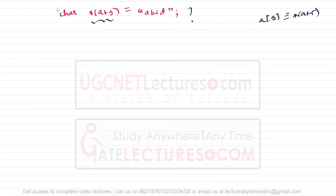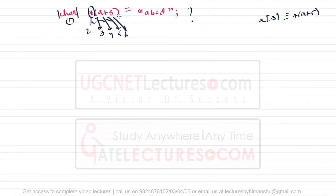For this statement: 'char' itself is one single token, 'star' is the second token, the opening bracket is the third token, 'a' is the fourth token, the plus sign is the fifth token, 'five' is the sixth token, the closing bracket is the seventh token, the single equal-to sign is the eighth token.